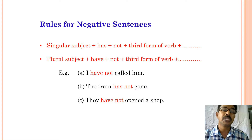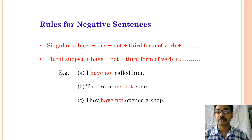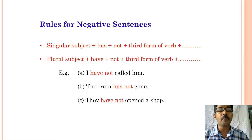Sometimes we use negative sentences. To frame negative sentences, the structure is: singular subject plus has plus not plus third form of the verb plus object, or plural subject plus have plus not plus third form of the verb plus object. Examples: I have not called him, the train has not gone, they have not opened a shop.